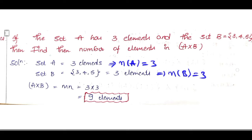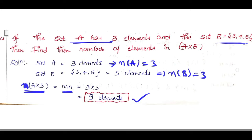Number of elements in A cross B — we learned this as note 1 in last class. If set A has M elements and set B has N elements, then the number of elements in A cross B equals M×N. Here, M×N = 3×3 = 9. So set A has 3 elements, set B has 3 elements, and A cross B has 9 elements. Now we will see the 3rd question in this exercise.